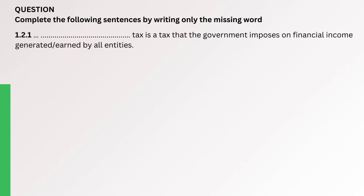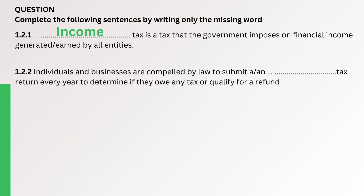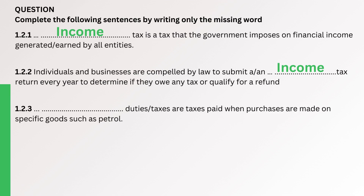Complete the following sentences by filling in only the missing word. Question. Income tax is a tax that the government imposes on financial income generated and earned by all entities. The correct answer is Income. Question. Individuals and businesses are compelled by law to submit an income tax return every year to determine if they owe any tax or qualify for a refund. The correct answer is Income. Question. Excise duties or taxes are taxes paid when purchases are made on specific goods such as petrol. The correct answer is Excise.